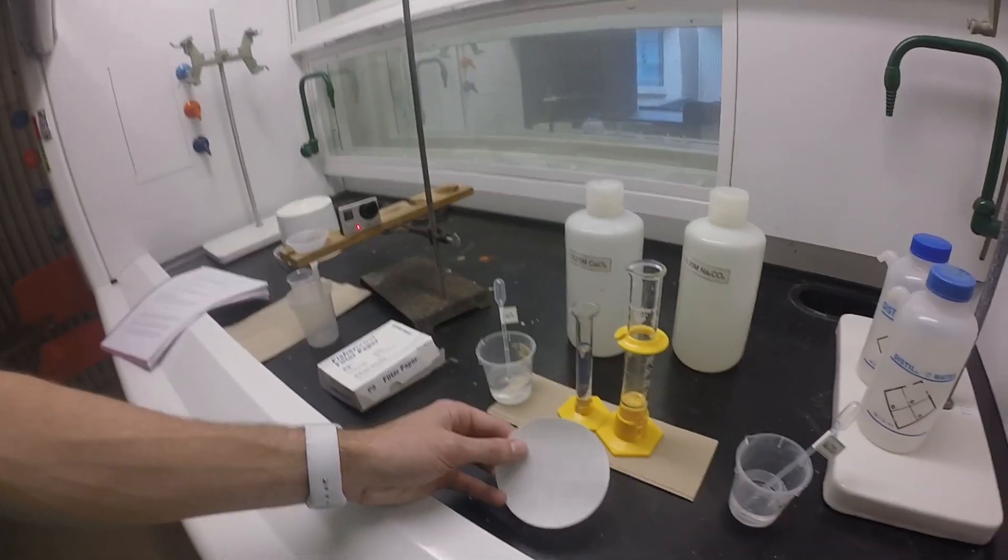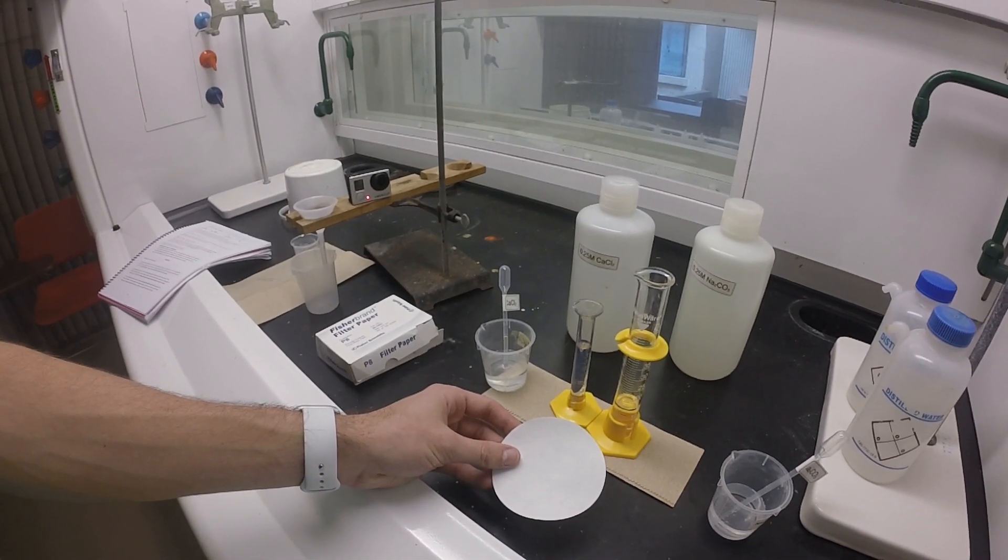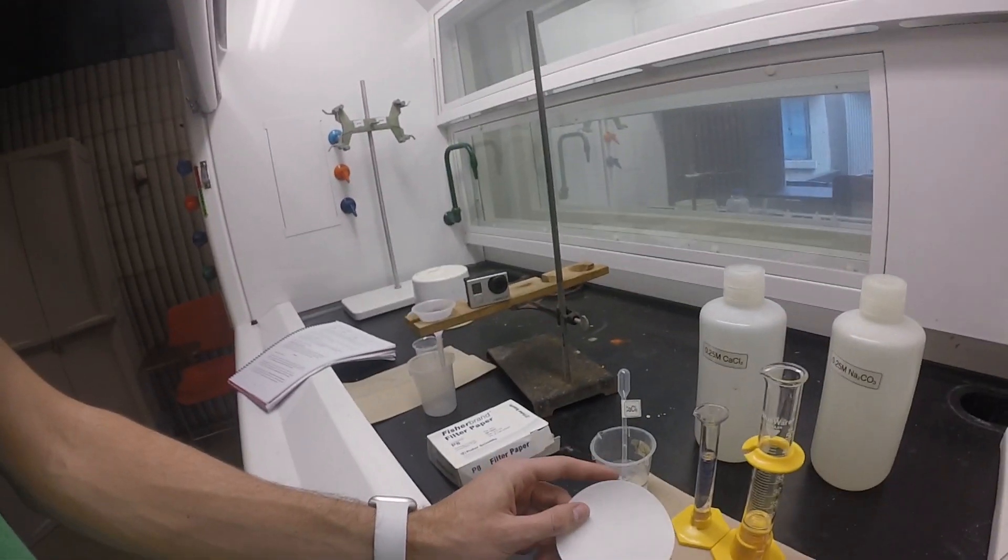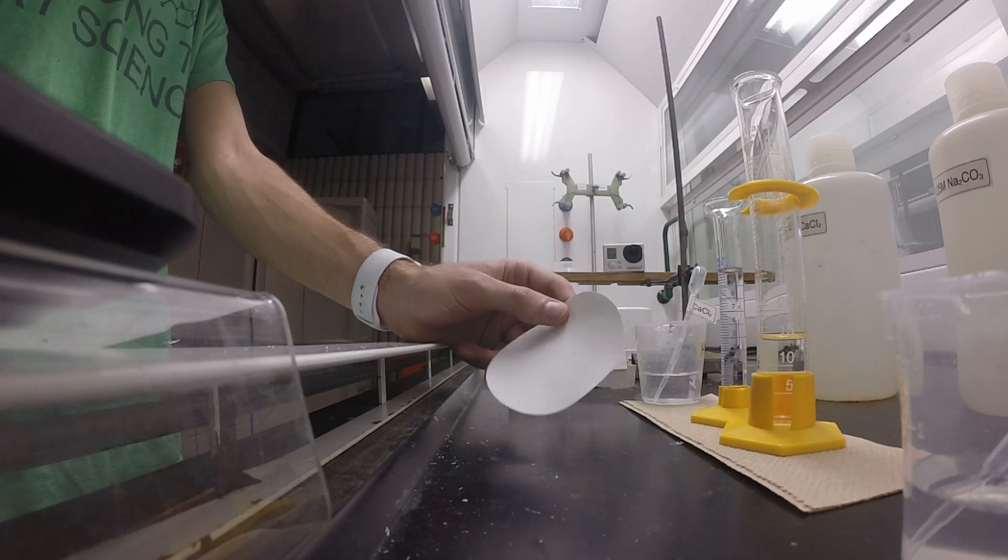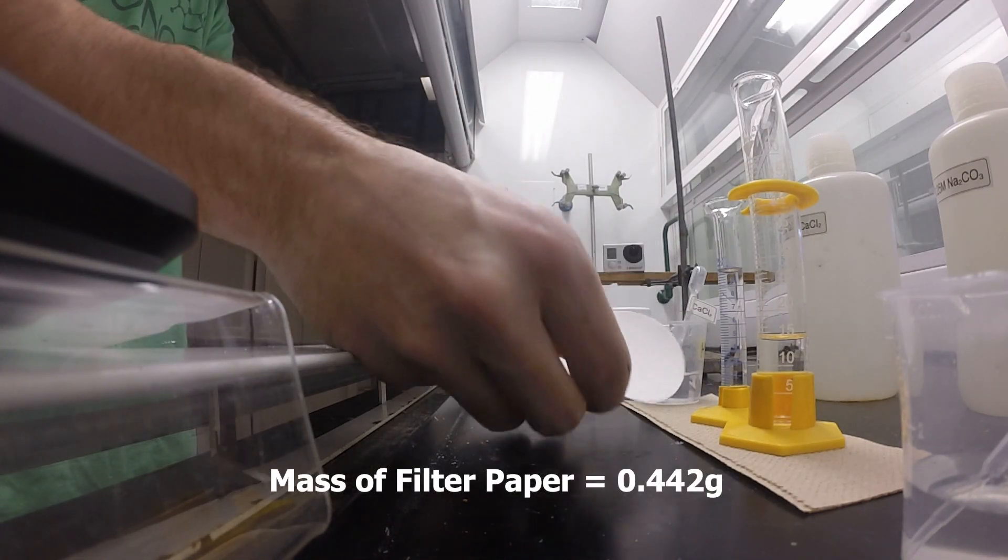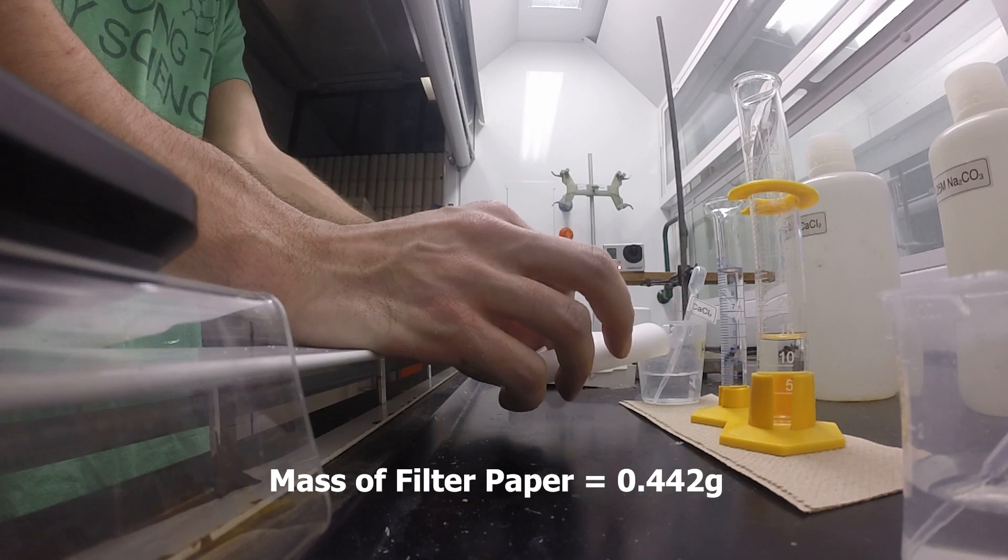Unfortunately I didn't record weighing it, but you should see in about two seconds the weight for the filter paper come up on screen. This was the dry weight - we're going to need this later to calculate how much product we have. Now I'm going to fold the filter paper so we can use it in the funnel.